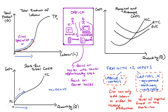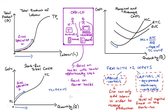This initial section where total costs increase at a decreasing rate is attributed to specialization — inputs are becoming more productive, so each additional unit produced is cheaper to make. In other words, marginal cost decreases. Marginal cost is the cost of each additional unit, technically equal to the change in total cost divided by the change in quantity. Importantly, marginal cost equals the slope of the total cost function, since slope is rise over run, which is change in TC over change in Q.